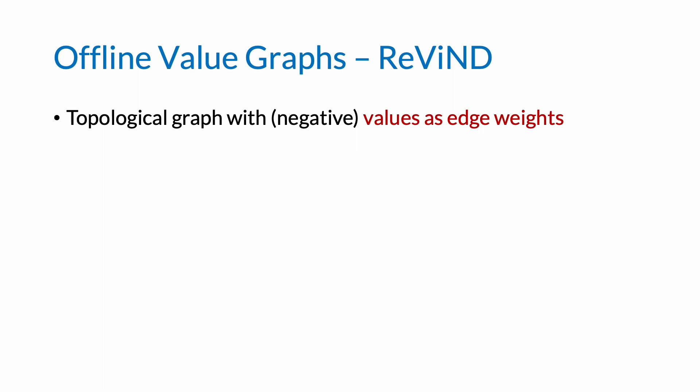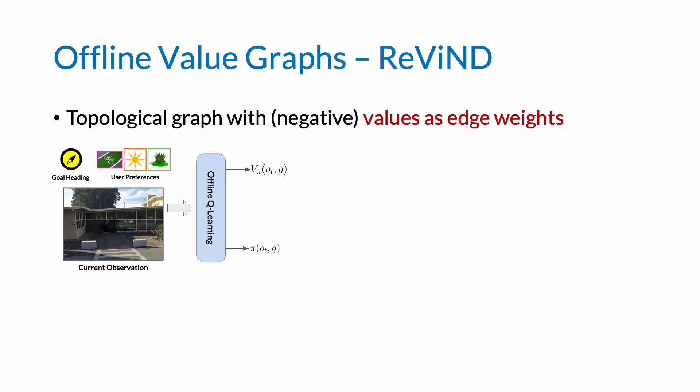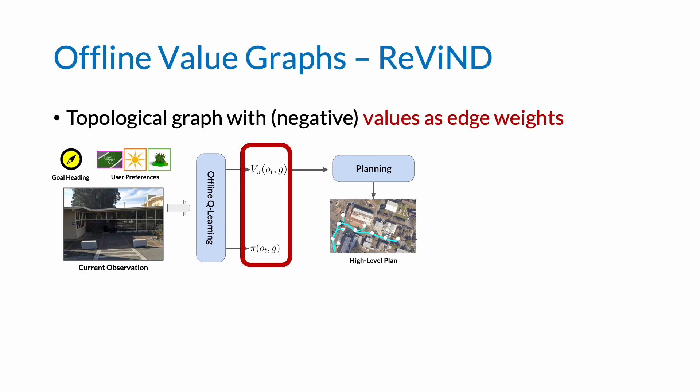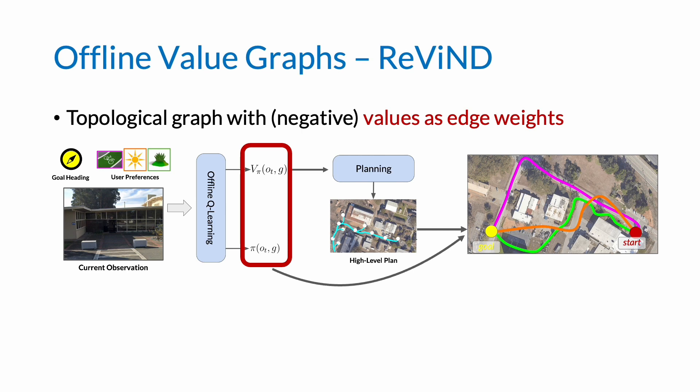Therefore, using this offline Q function to generate the distances in the topological graph gives us a graph where the connectivity represents the edgewise goal condition value function. Schematically, our system, Rewind, uses different reward functions, like staying on sidewalk, sun, or grass, to train different Q functions, which give us both a value function and a control policy, which are then used for high-level planning using a topological graph. This high-level plan is then executed by using the learned policy at the low level, leading to qualitatively distinct paths as shown on the right.